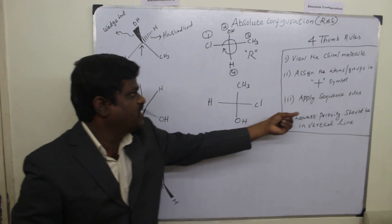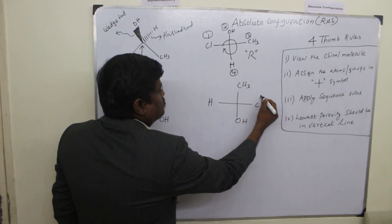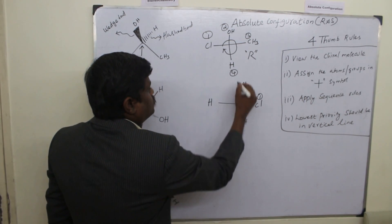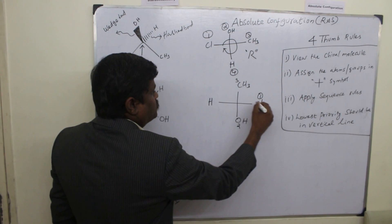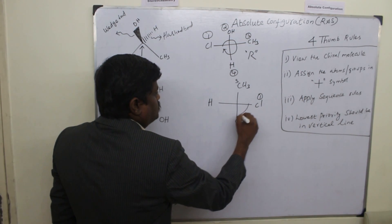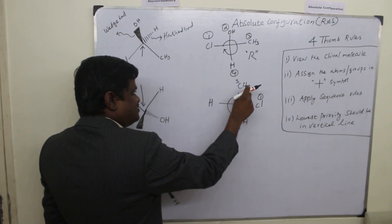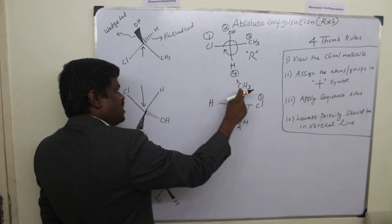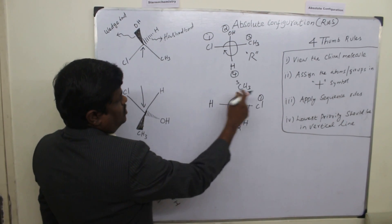Now third rule is apply the sequence rule. Yes. According to the atomic number one, two and three. So now you connect it. This goes like this. So that means this is going as anti. This is clockwise.